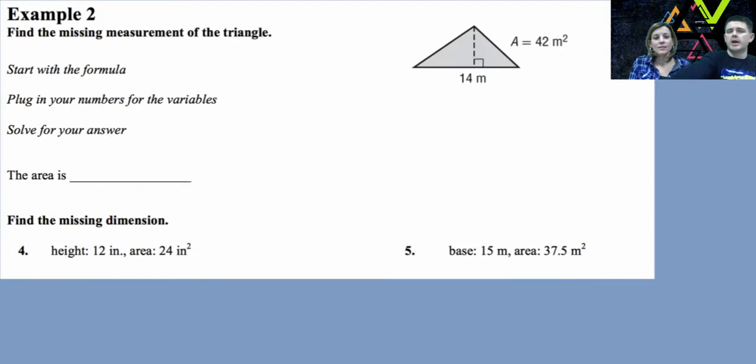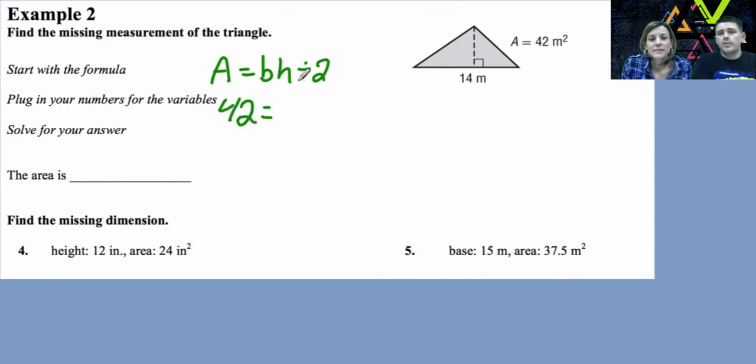All right. So hopefully you've noticed in each of these problems, we haven't been taking two sides of the triangle to find our areas. We've been looking for that height, which is that vertical distance. We're always looking for that right angle when we're looking for our height. So now we're going to go backwards. We're going to find a missing measurement. Just like our other one, you start with the formula. The formula is base times height divided by two. We know the area is 42. We know the base is 14. But we don't know the height.